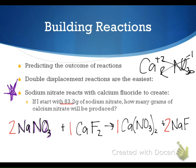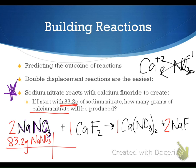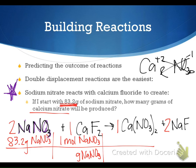Now we can start to answer our stoichiometry question. If 83.2 grams of sodium nitrate is what we start with, how many grams of calcium nitrate can be produced? We're going to start here with our T-chart. 83.2 grams of sodium nitrate, NaNO₃. We're going to go from grams of sodium nitrate to moles.